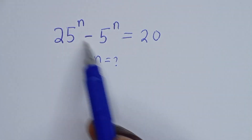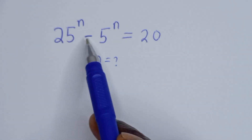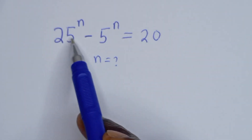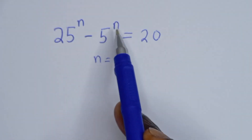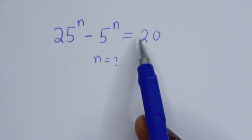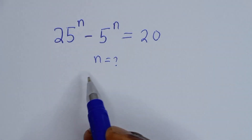Hello, how to solve for n from this given equation: 25 to the power of n minus 5 to the power of n is equal to 20.